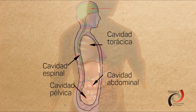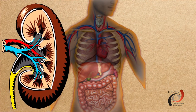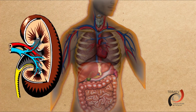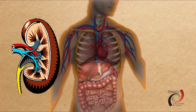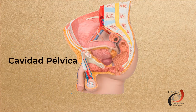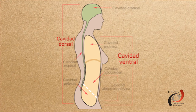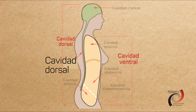La mayor parte del tracto gastrointestinal, así como los riñones y las glándulas suprarrenales, se encuentran en la cavidad abdominal. Por otro lado, en la cavidad pélvica se encuentra una porción importante del sistema urogenital y el recto. Entre las cavidades principales del cuerpo, la más pequeña de ellas es la cavidad dorsal.